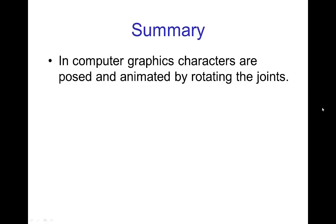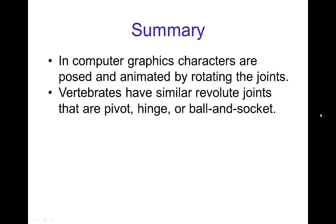In summary, in computer graphics, characters are posed and animated by rotating the joints. Vertebrates have similar revolute joints that are either pivot joints, hinge joints, or ball and socket joints.